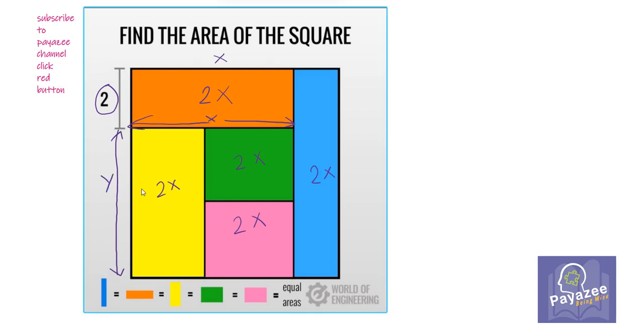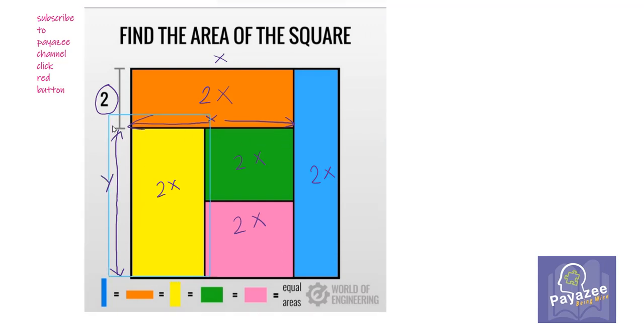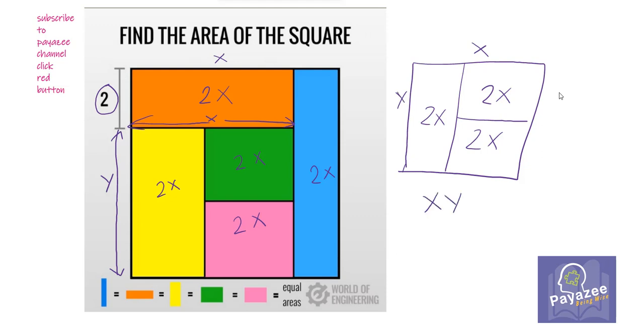Now let's solve this particular square or this particular shape which has three shapes. I will draw it here. This is 2x, 2x and 2x. This is x and this is y. Now area of this square is xy equals 2x plus 2x plus 2x which equals 6x. xy equals 6x, so y will equal 6.